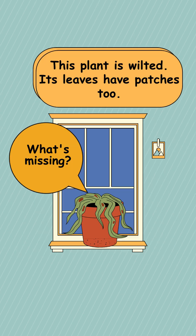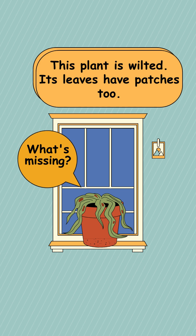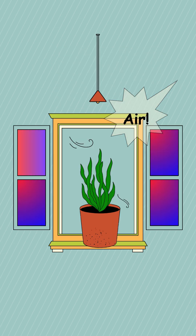This plant is wilted. Its leaves have patches too. What's missing? It's air. Plants need air to exchange gases with the atmosphere, just like we breathe in and out.